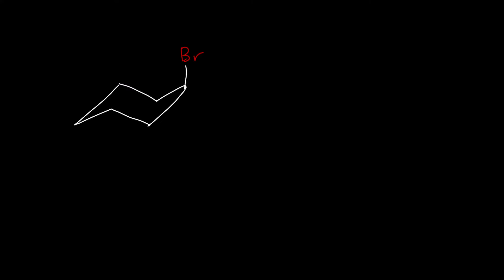Now let's talk about a chair conformation ring and how we can have an SN2 reaction happen on that. Let's say we have a bromine in the axial position facing upward, and it's being reacted with hydroxide. Hydroxide has three lone pairs. The hydroxide ion — the oxygen — has a negative charge and is going to attack this carbon. Then the electrons in the bond between the carbon and the bromine are going to go toward the bromine.